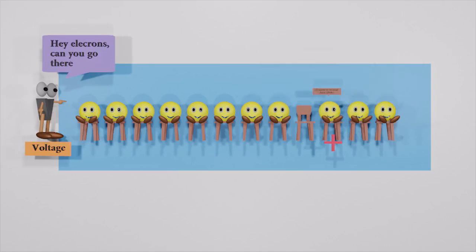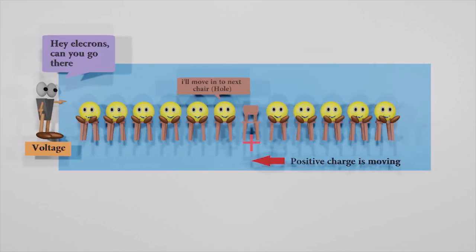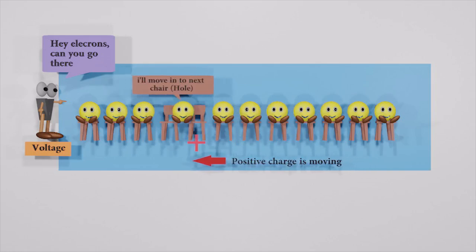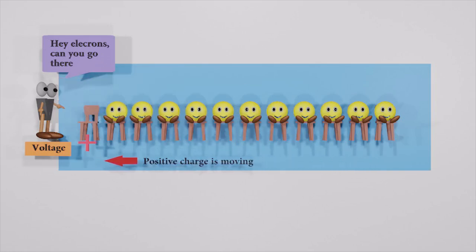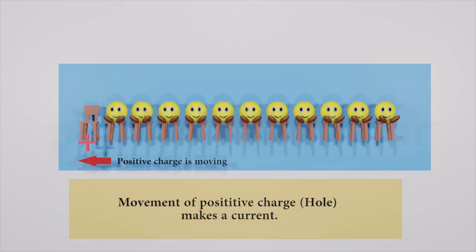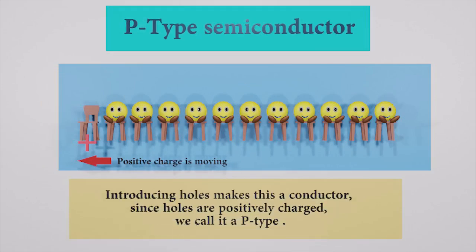Actually, it seems like a chair moving from one end to another, not the electrons. The electrons are moving in the opposite direction of the positive hole. Movement of holes makes a current. Introducing new holes makes this a conductor. Since holes are positively charged, we call this a P-type semiconductor.